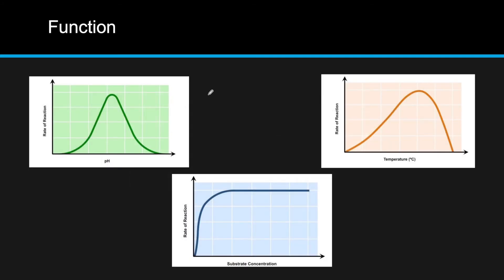Now we start getting into more of the function of enzymes. There are three main factors that will change how well an enzyme is working. If you remember from the previous subtopic about proteins, pH and temperature greatly affect how a protein functions. If we get too high of a temperature it'll start to denature. If the pH varies it'll start to denature — it'll change the charge of the molecules and start making the molecule want to unravel as it changes the chemical properties. For pH, we have an optimal pH, and as you go down both sides the rate decreases symmetrically.